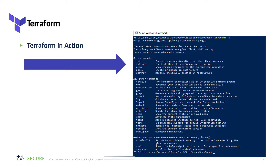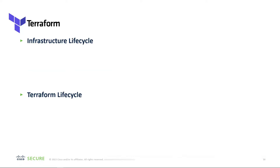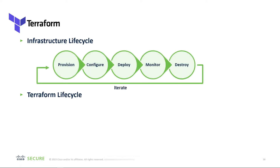For example, if an internet gateway object needs to be created and assigned first before you can assign it to an asset, Terraform ensures it's created in the right order. The infrastructure lifecycle — provision, configure, deploy, monitor, and destroy — aligns to Terraform's workflow.